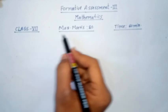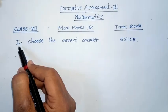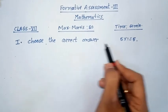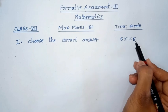FA3 question paper contains maximum marks 20 marks and time duration is 60 minutes. First roman, choose the correct answer. There are 5 questions, each one carrying 1 mark. So total marks are 5 marks.